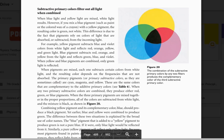When any two primary subtractive colors are combined, they produce either red, green, or blue pigments. When the three primary pigments are mixed together in proper proportions, all of the colors are subtracted from white light and the mixture is black as shown in Figure 20.